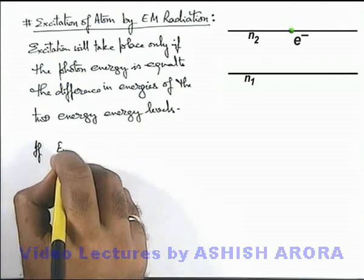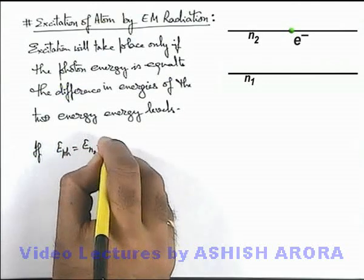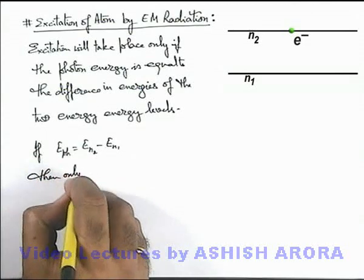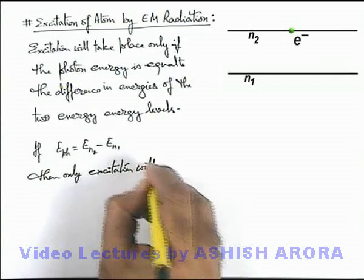So here we can say, if energy of photon is exactly equal to En2 minus En1, then only excitation will occur.